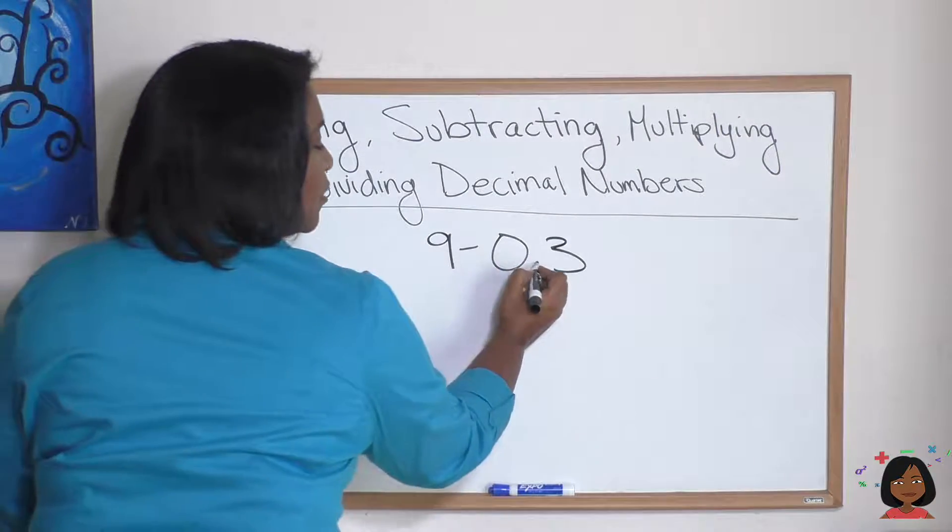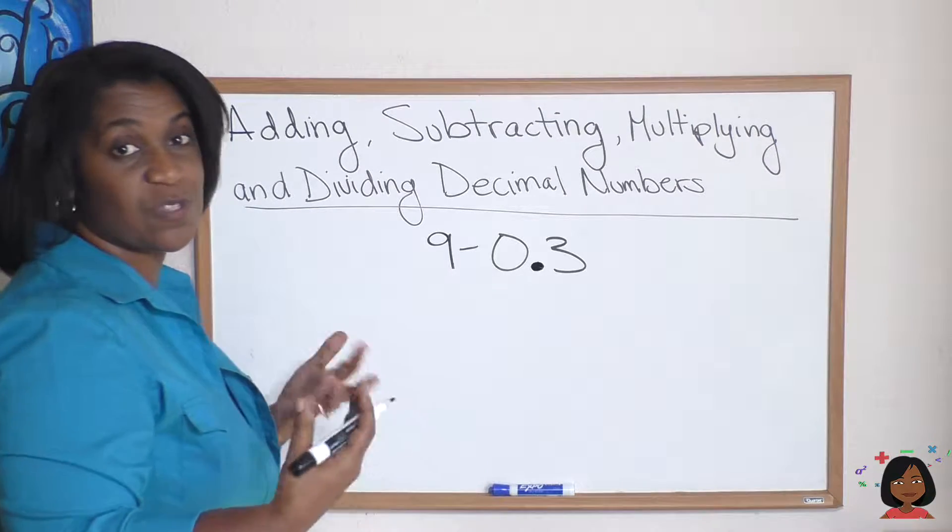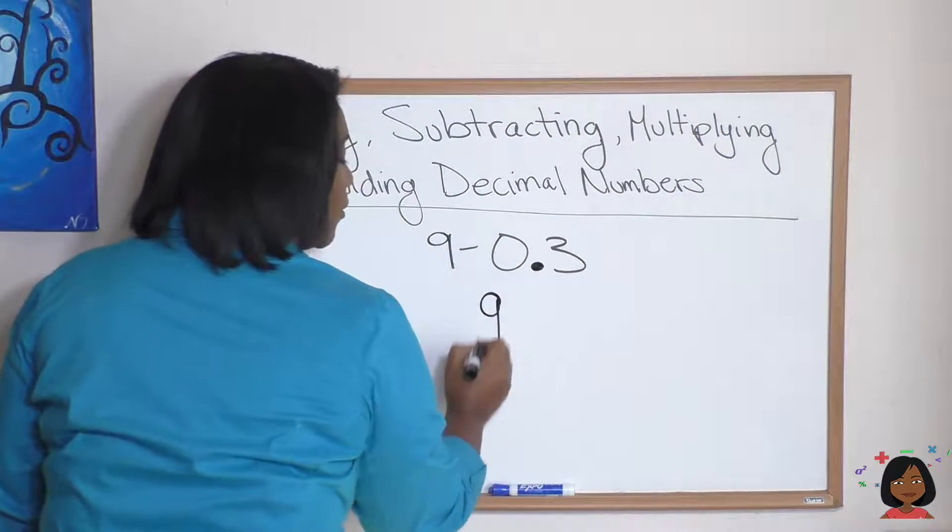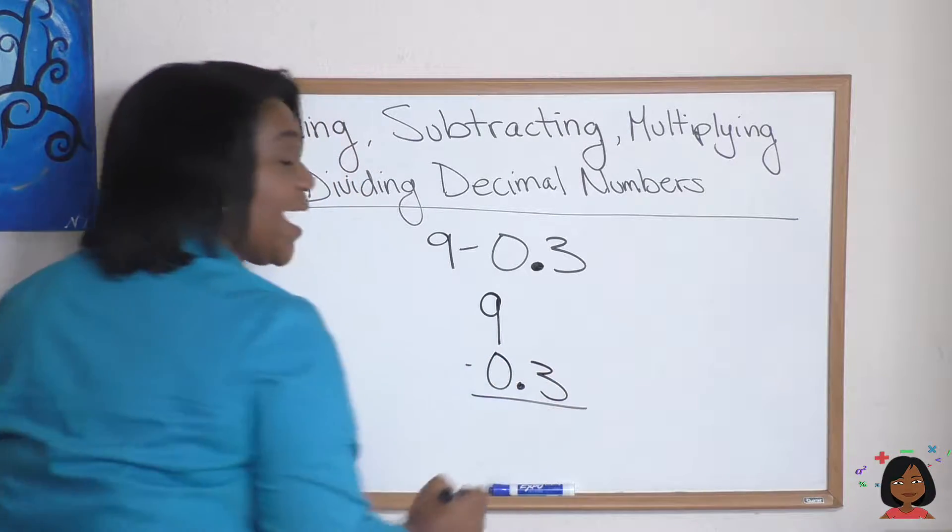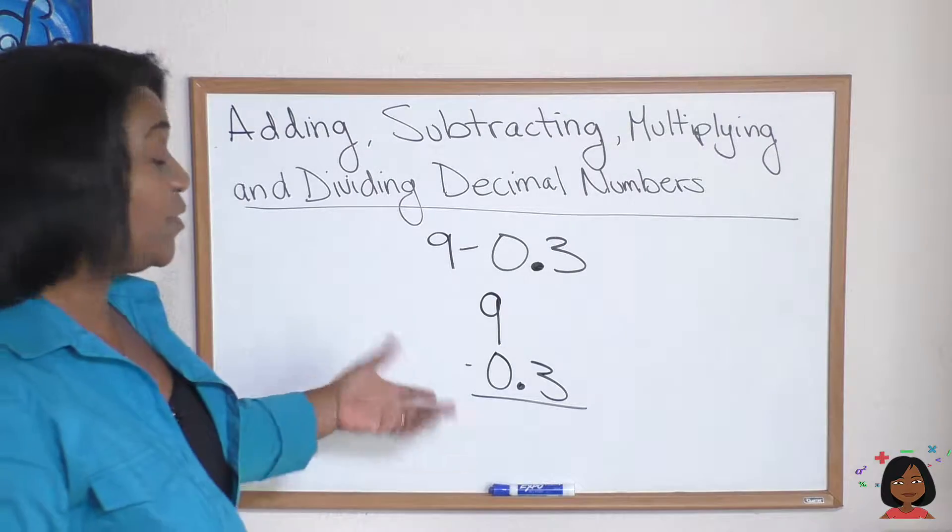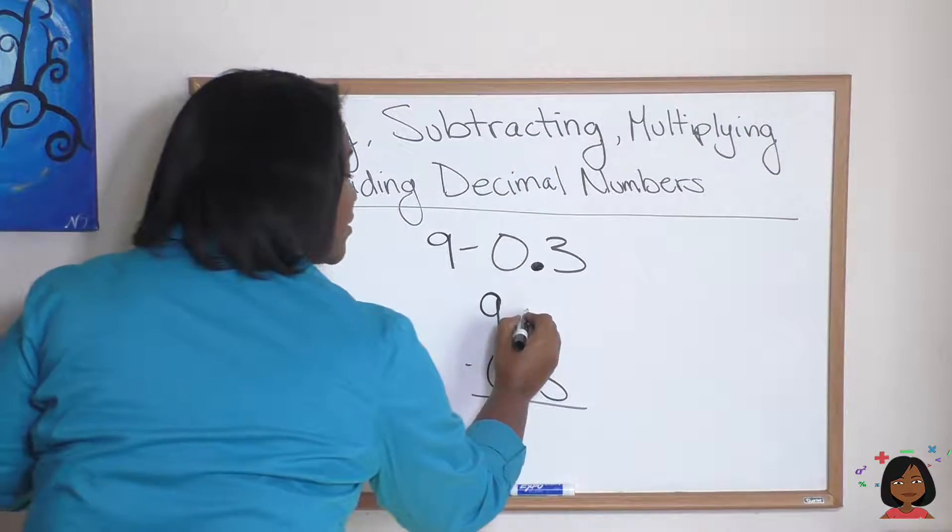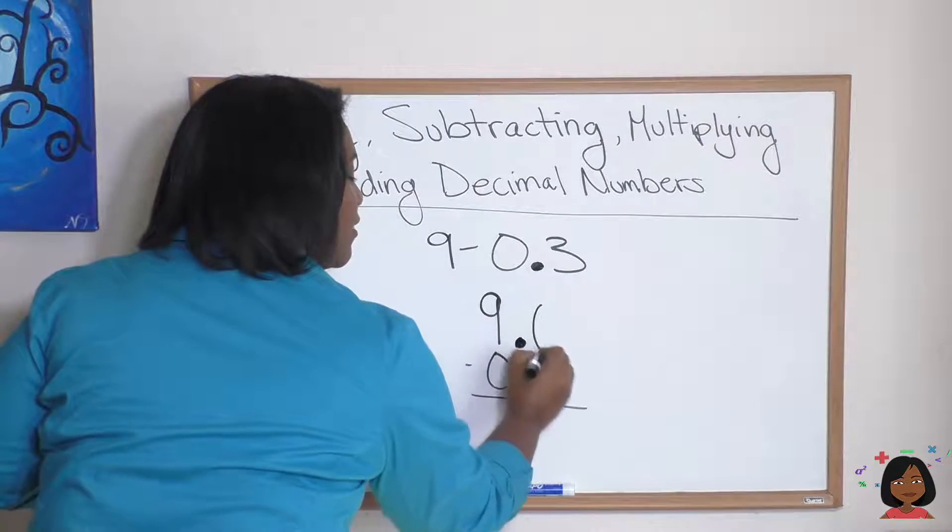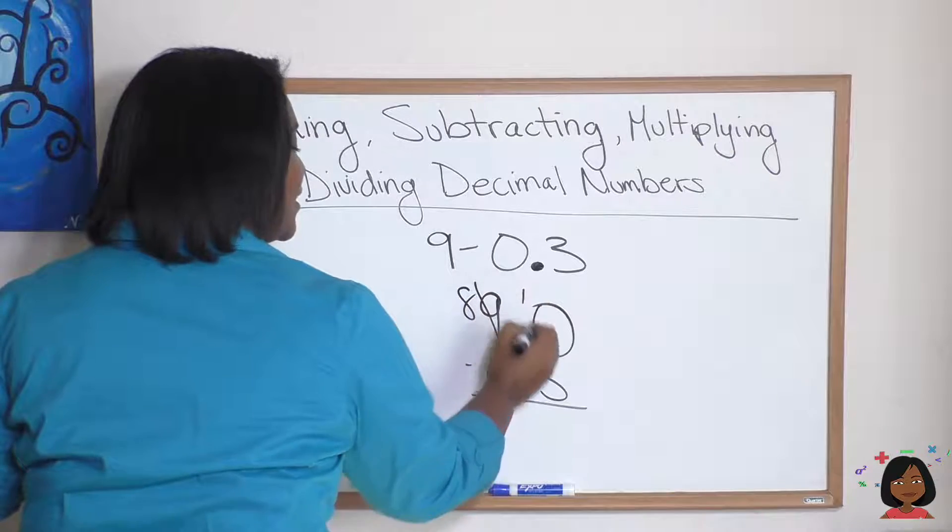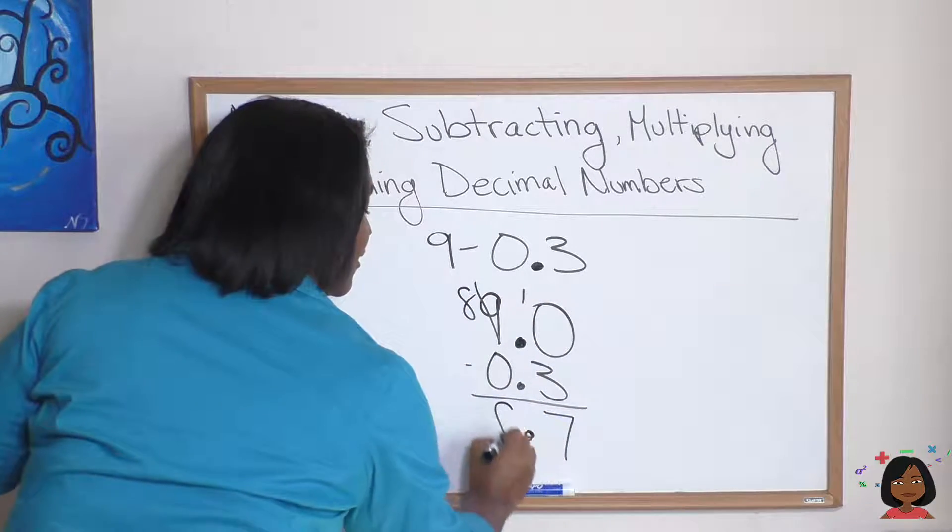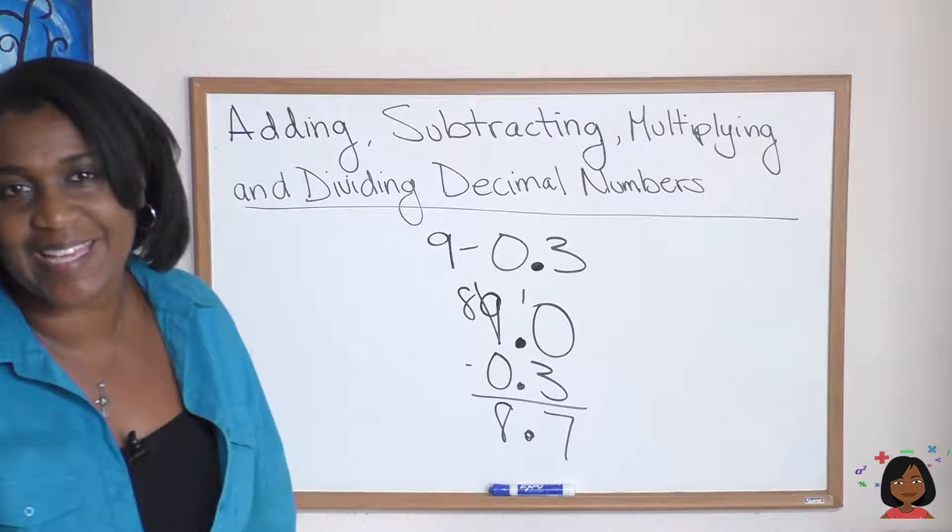Here's another subtraction problem. Again, here's our decimal, we're going to line them up. Now we have a whole number 9 - we have to assume that the decimal's after that 9. So here we go, and 0.3. As you can see, like the previous problem, we've got to borrow by putting zero first as a placeholder. So here we go, there's my decimal, there's my zero. Now go ahead and do the math: 8.7.